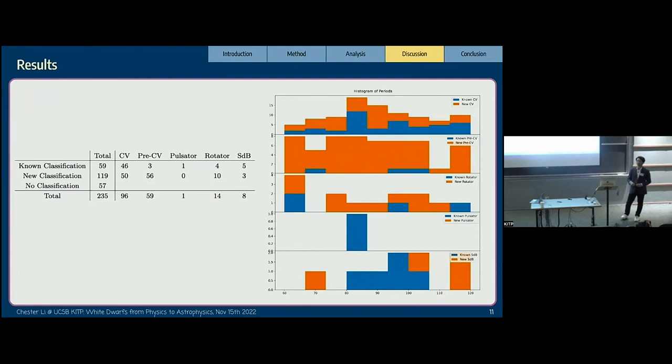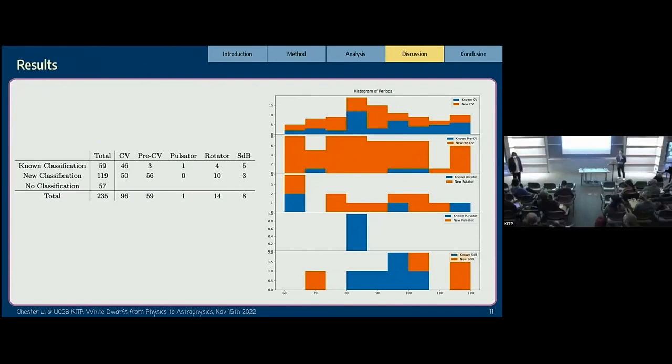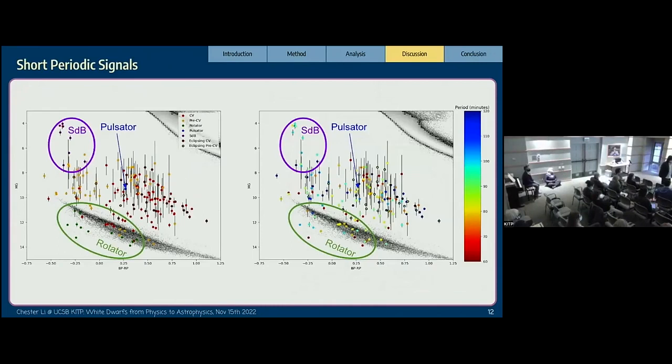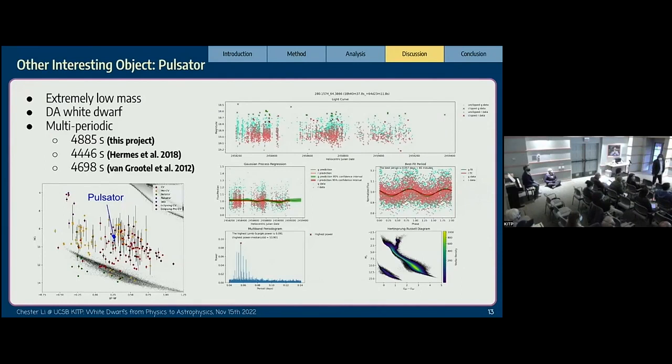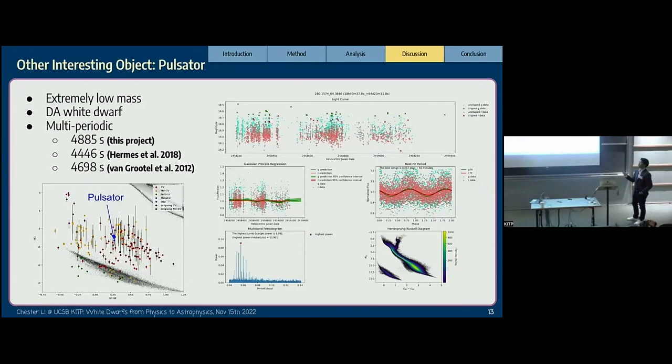Can you go back to that pulsator star with the periods listed? I was wondering if you could comment - you say multi-periodic, are those three separate periods or are they the same one that has changed over the years? It's the same star, but it shows different periods at different times.